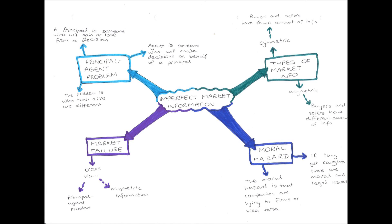Next, in our top right, we have types of market information. Market information can either be symmetric or asymmetric. Symmetric is the same, just like a symmetric shape, and asymmetric is when things are not the same.